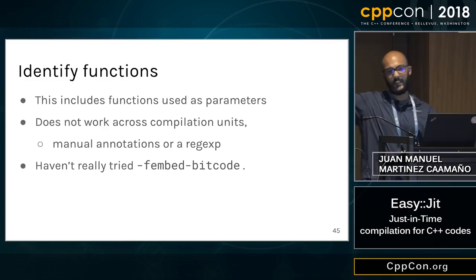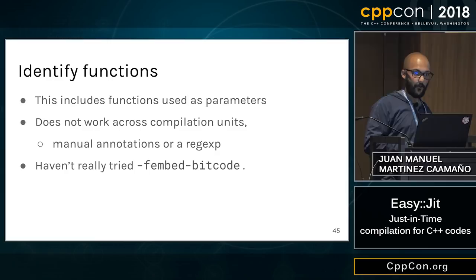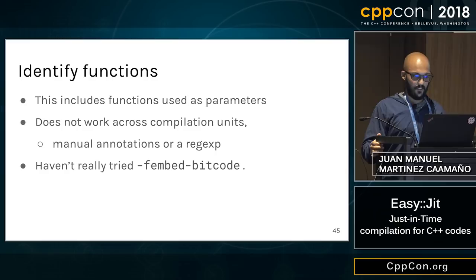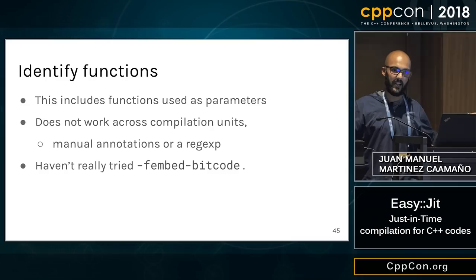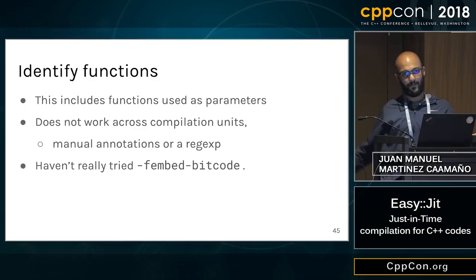There is also a Clang option called -fembed-bitcode that embeds the bitcode of the entire application in the executable. I know how it works and what it gives, but I haven't really tried using it, because in my vision of a just-in-time compiler you only want to recompile a few kernel functions at runtime — not your entire application. But who knows, maybe that approach is better.